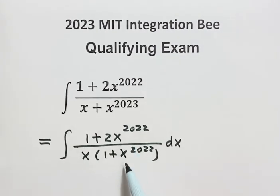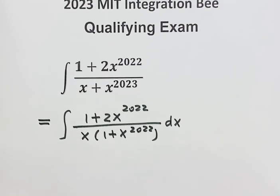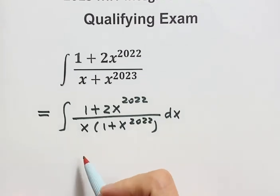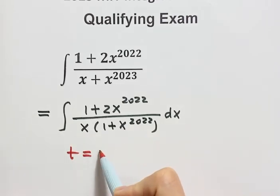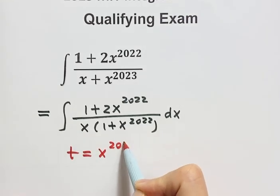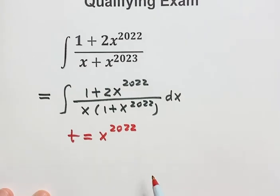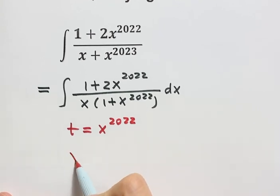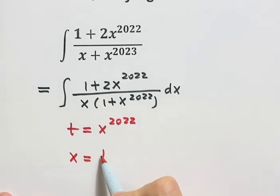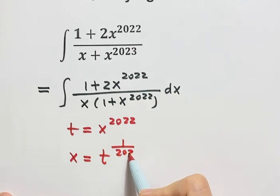Because we have these two terms, to simplify the expression, we're going to set a new variable. Let t equal x to the power 2022. Then solve for x — raise both sides to the power 1 over 2022, so x equals t to the power 1 over 2022.